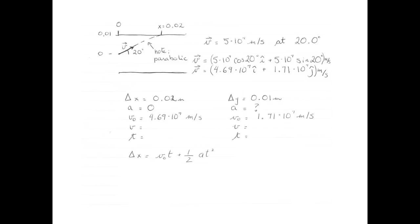When you know three of the kinematic quantities in one direction, you can figure out the other two unknowns. We have more information for the x direction, so we'll use it to find the time it took for the electron to hit the top plate. Using delta x equals v0 t plus one-half a t-squared, with acceleration equal to 0, solving for time gives displacement over initial velocity: 0.02 divided by 4.69 times 10 to the 7, which equals 4.26 times 10 to the negative 10 seconds.